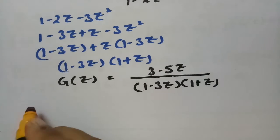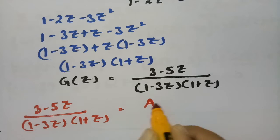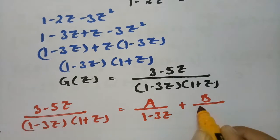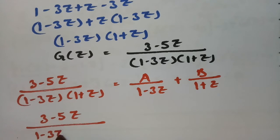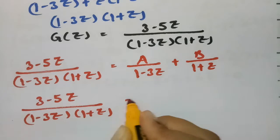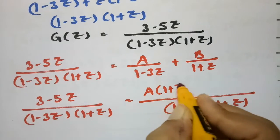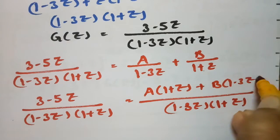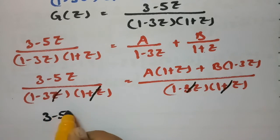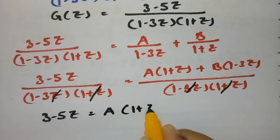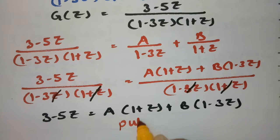To resolve into partial fractions: (3 minus 5z) divided by (1 minus 3z)(1 plus z) equals A divided by (1 minus 3z) plus B divided by (1 plus z). Taking LCM and cross-multiplying: 3 minus 5z equals A times (1 plus z) plus B times (1 minus 3z).